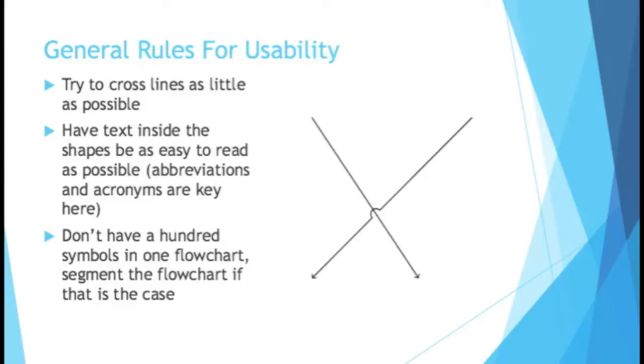You see that image on the right? One of the lines has a little half circle. That's supposed to show that the one line is jumping over the other. So if you have to do the necessary evil of crossing lines, do a half circle so it looks like they're jumping over each other. It helps follow the path better.